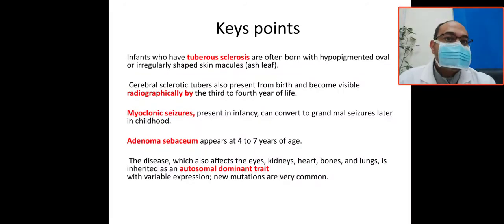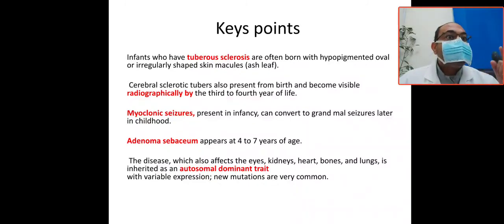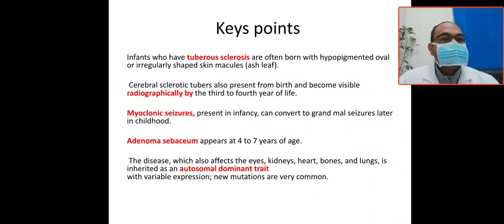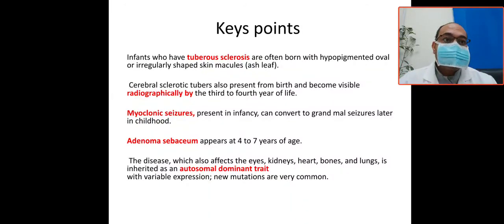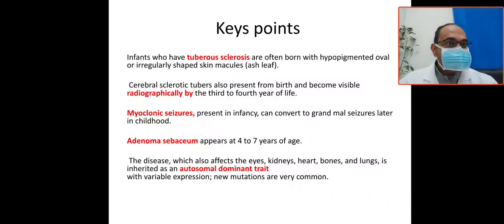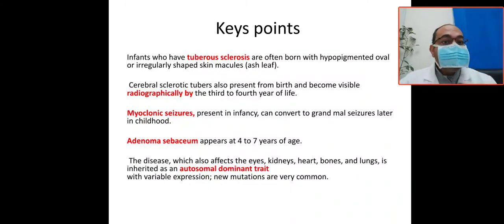Key points: Tuberous sclerosis, also called phakomatosis or visceral syndrome, presents with hypopigmented oval irregular-shaped skin macules called ash leaf spots. There are associated neurological abnormalities including cerebral sclerotic tubercles visible on CT or MRI. Seizures — including myoclonic and later generalized — are common. Adenoma sebaceum appears at four to seven years of age.